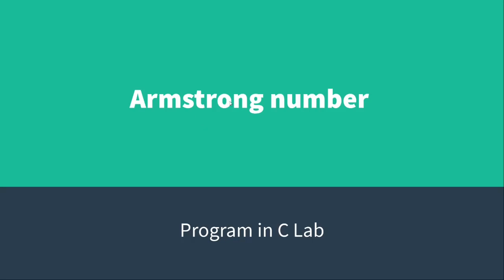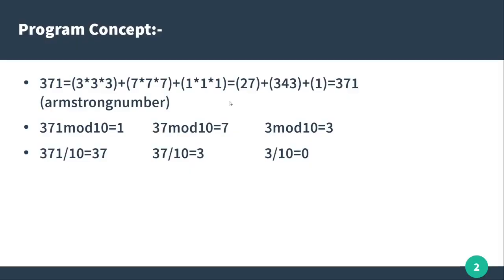So we are going to talk about the title and the concept of Armstrong numbers. Actually, how can we get the Armstrong number? In this example, you can take the number 371. That is 371 — this number is an Armstrong number. To verify, you need to add the cube of individual digits.